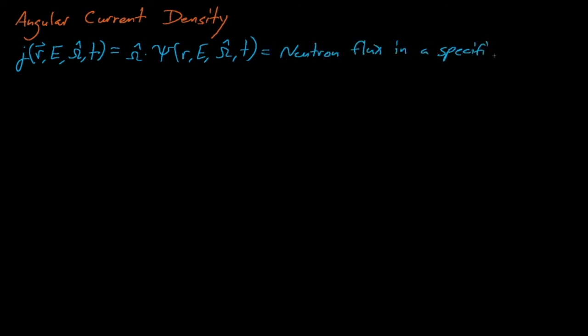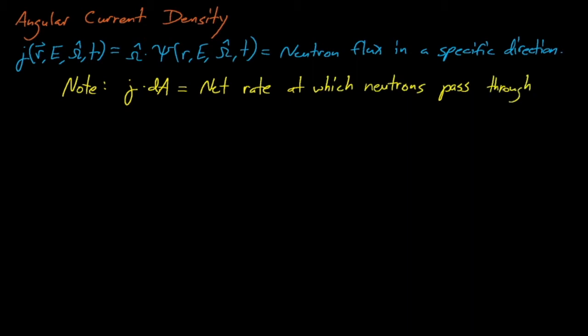We can also define an angular current density, little j, by weighting the angular dependent angular neutron flux by the direction omega. We might want to do this because then the dot product of j and some differential area dA is equal to the net rate at which neutrons pass through the surface dA.